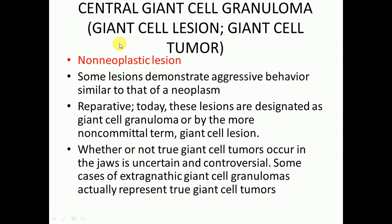It is also known as central giant cell lesion or giant cell tumor, but we should not call it a tumor. We should call it rather a granuloma or lesion because it is a non-neoplastic lesion. Central means it is found in the bone. There is another variant found in the peripheral soft tissues, known as peripheral giant cell granuloma.